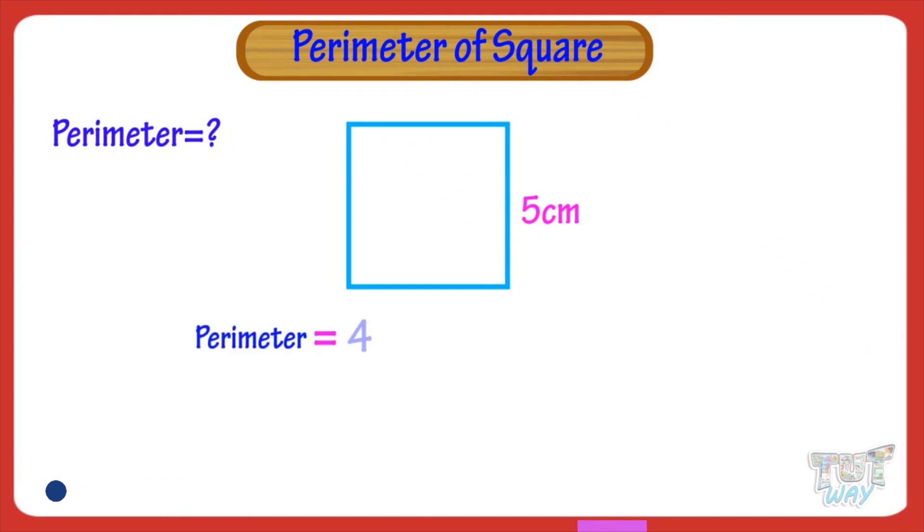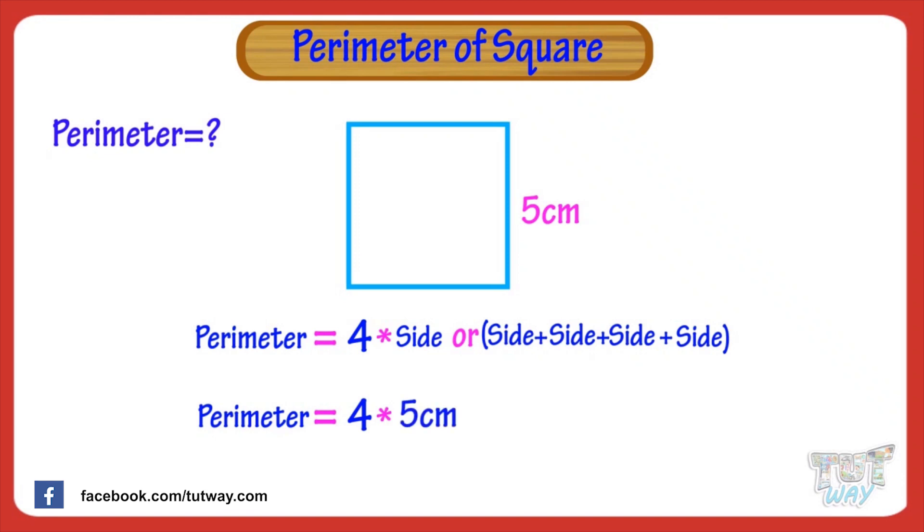Perimeter equals 4 multiplied with side. Here side is 5 cm. So, perimeter is 4 multiplied by 5. 4 multiplied by 5 equals 20. So, perimeter is 20 cm.